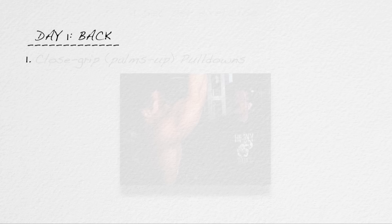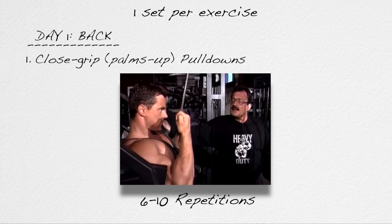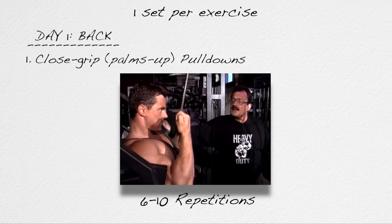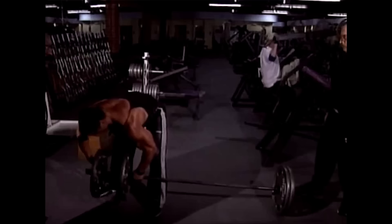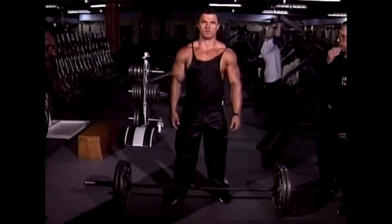Still under day one, write down 'Back' and the number one. Exercise number one for the back will be close grip, palms up, pull-downs for six to ten repetitions. Directly underneath that, write the number two: regular style — not stiff-legged — but regular deadlifts. There is no superset here; there will be no superset unless I specify. Where there is no superset, you may rest as long as necessary but no longer. Use your common sense — let your breathing slow down, and as soon as you feel ready to resume training, do so. Do not allow the workout to degenerate into a race against the clock, and don't malinger either.